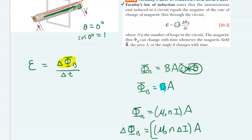So now we have an expression for the change in magnetic flux. We're going to substitute that into our induced EMF equation. So we'll have μ₀ times n times the change in current times the area, all divided by the change in time.